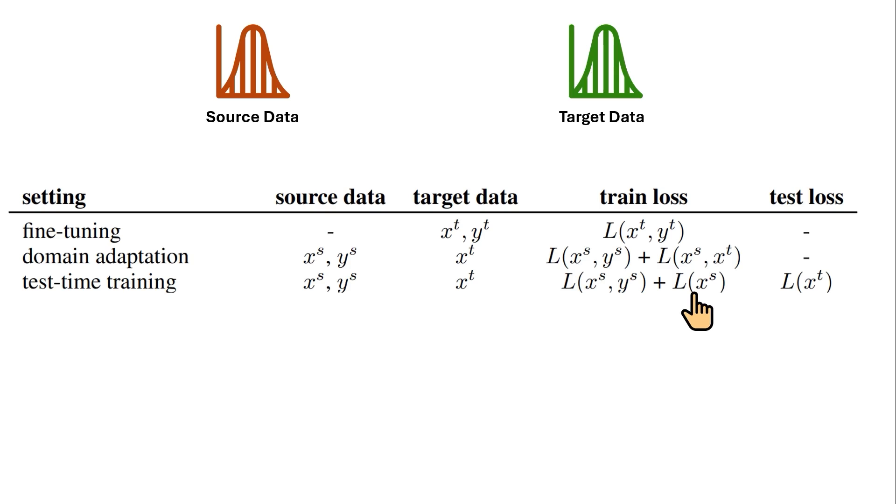So that's where TENT comes and it proposes fully test time adaptation. We don't really care about the source data, all we care is that at the test time we apply some loss function so as to increase the accuracy. Hopefully all the differences make sense.